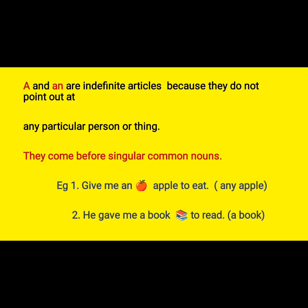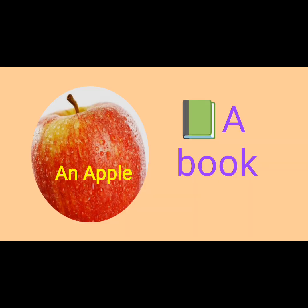We understood in our previous video while we were revising nouns what a common noun is. Here you can see a flashcard which presents the indefinite article: an apple, a book. So the article an is used before nouns beginning with a vowel, and a is used before nouns beginning with a consonant.